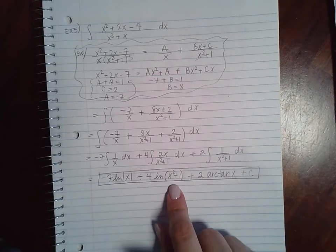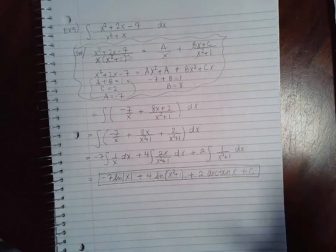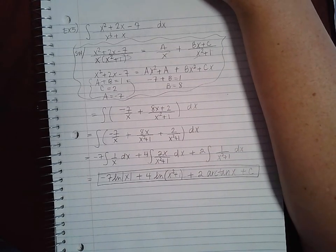You could use the properties of ln's to combine the ln's together, but I don't mess with that. Once I integrate it, I just write the answer and you're good to go. And this is the end of the partial fraction section.